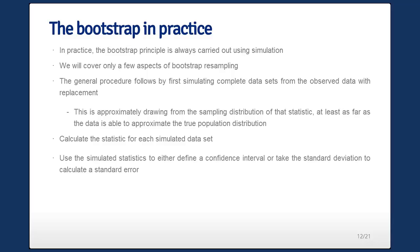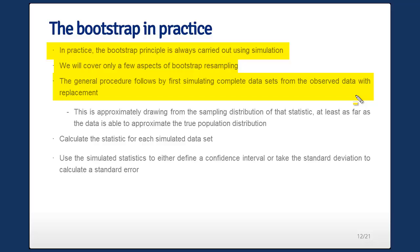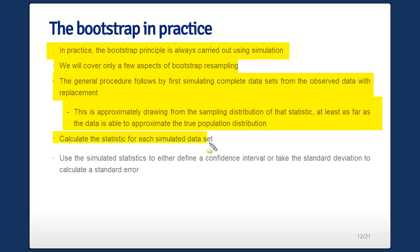In practice, the bootstrap is always carried out by simulation. The general procedure follows by simulating complete data sets from the observed data with replacement. We don't know the true distribution, so we treat each data point as having probability one over n and sample IID from the data set itself — putting all observations in a bag and pulling them out, but putting them back so the same data point can be drawn twice. Doing this repeatedly and calculating the statistic gives an approximation to its sampling distribution. We calculate the statistic for each simulated data set and use the simulated statistics to define a confidence interval or standard error.